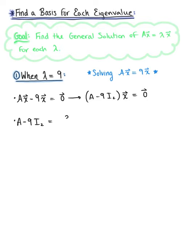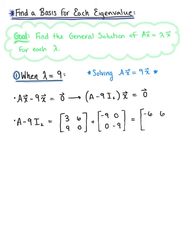So matrix A is 3, 9, 6, 0, and we add the matrix negative 9, 0, 0, negative 9. Combining like terms: 3 minus 9 is negative 6; 6 plus 0 is 6; 9 plus 0 is 9; 0 minus 9 is negative 9. We can already see the linear dependence among the column vectors, confirming that 9 is an eigenvalue of matrix A.